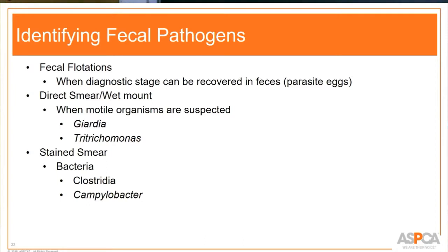Moving on to fecal pathogens. There are three different techniques: basic fecal flotation — looking for parasite eggs; direct smear or wet mount — typically when suspecting motile organisms like Giardia or Trichomonas; and stained smear — looking for specific bacteria, bacterial overgrowth, or white blood cells.